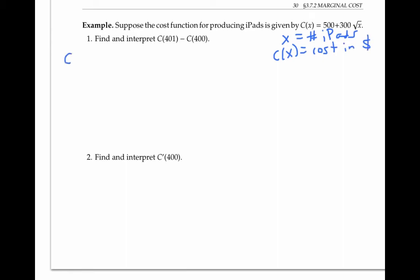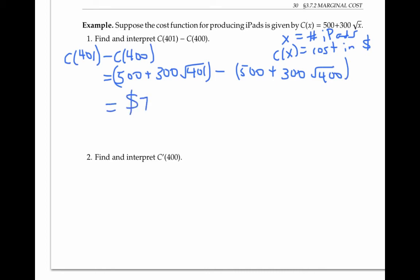Then C(401) - C(400) is given by (500 + 300√401) - (500 + 300√400). This simplifies to $7.50 rounded to the nearest cent.